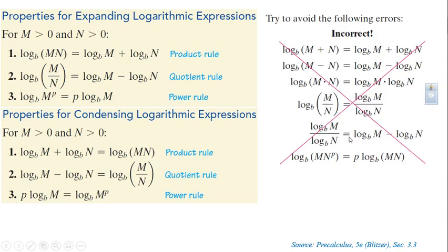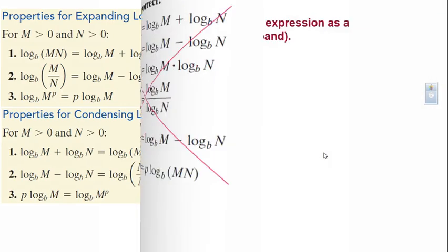Common errors to avoid: there is no rule for the log of a sum or the log of a difference. The rule is for the log of a product — which converts to a sum — and the log of a quotient, which converts to a subtraction. Also, if two things are multiplied and only one has an exponent, that exponent applies only to that one term, not to both.